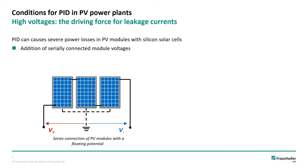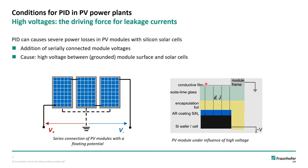Let's look at the conditions that lead to potential induced degradation in PV power plants. In power plants, PV modules are connected in series so that the voltages sum up and can reach several hundreds of volts. Depending on where the system is grounded, the solar cells can be at a high positive or high negative potential compared to the grounded frame. If a conductive film, perhaps due to moisture or dust, is applied on the surface, an electric field forms that can direct through the glass and encapsulation materials as well as through the passivating layer, causing leakage currents that can damage the cell. This is basically what happens in PID.